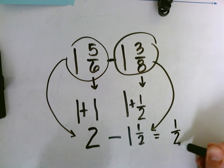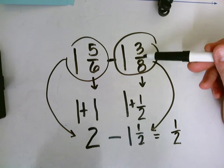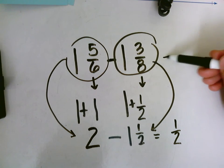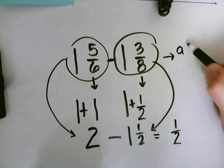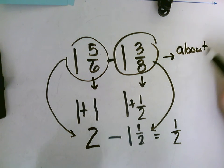So one and five sixths minus one and three eighths is about one half. All right, so you're going to try those problems on your own today on the Cammy pages.